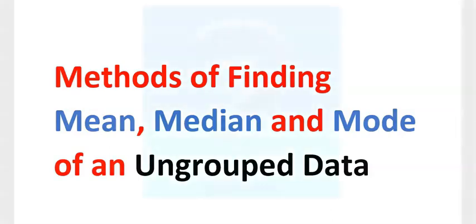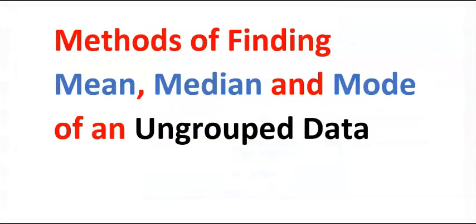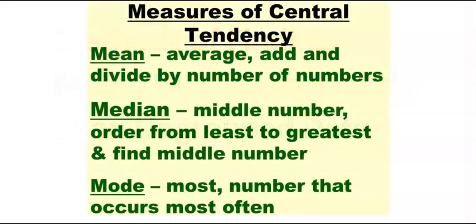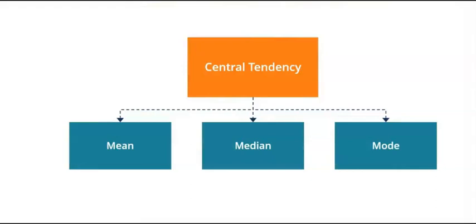This video will cover two different methods of calculating mean, median, and mode of ungrouped data in statistics. Finding the mean, median, and mode is known as measures of central tendency, at times referred to as measures of central location.